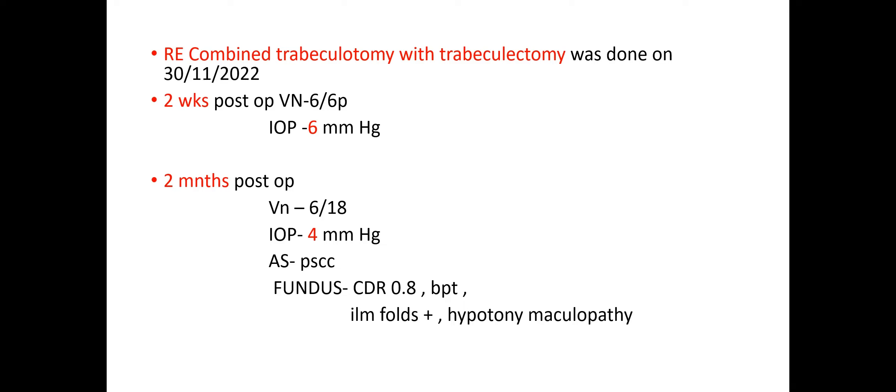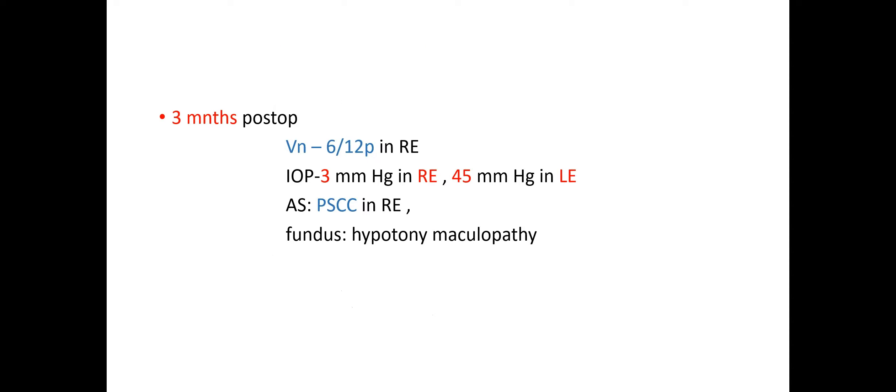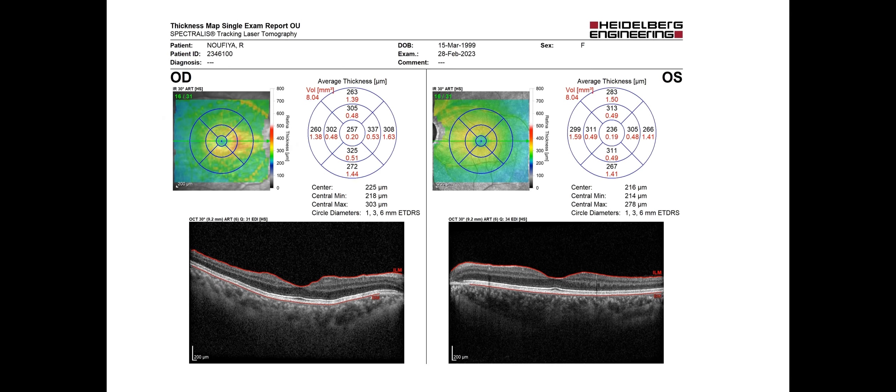After 2 weeks of surgery, the intraocular pressure was 6 mmHg. But at 2 months post-operative, the intraocular pressure dropped to 4 mmHg with the patient developing hypotonic maculopathy. At 3 months post-op, the intraocular pressure remained low at 3 mmHg with persisting hypotonic maculopathy.